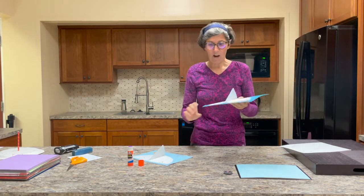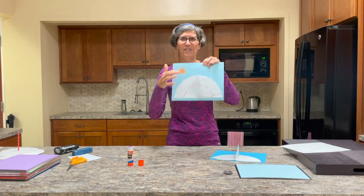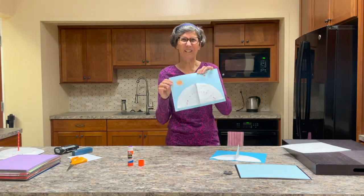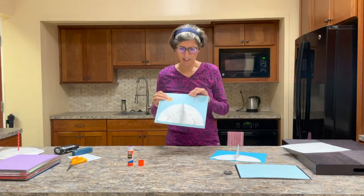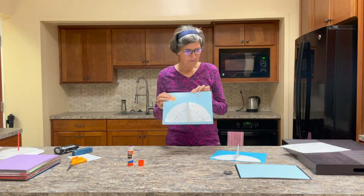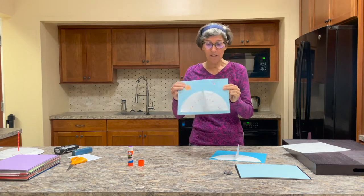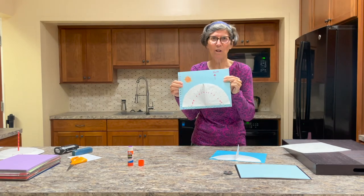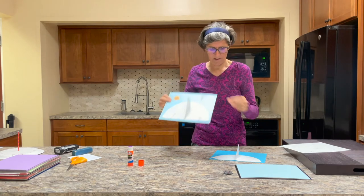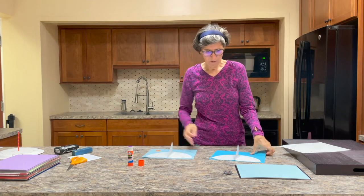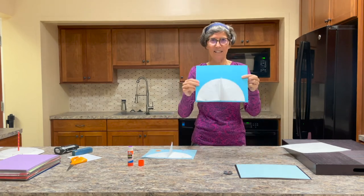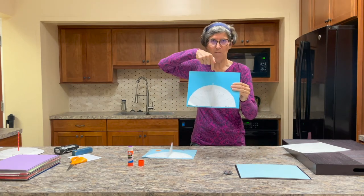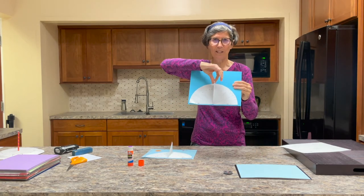Now I decorated mine — I drew a sun, I wrote 'sundial,' I did the squirrely lines. I'd suggest you do the same, it's pretty fun. But the one thing you do need is this little indicator that says which way is north.